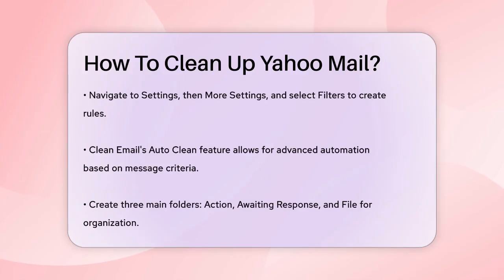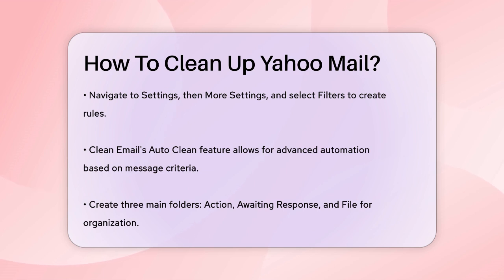If you need more advanced automation, Clean Email offers an auto-clean feature. You can set up rules to delete, archive, or categorize emails based on criteria like the age of the messages, their size, or read/unread status. Simply go to the Clean Email app, select the group of messages you want to create a rule for, tap the Create Rule button, define the rule's criteria, and select the desired action.